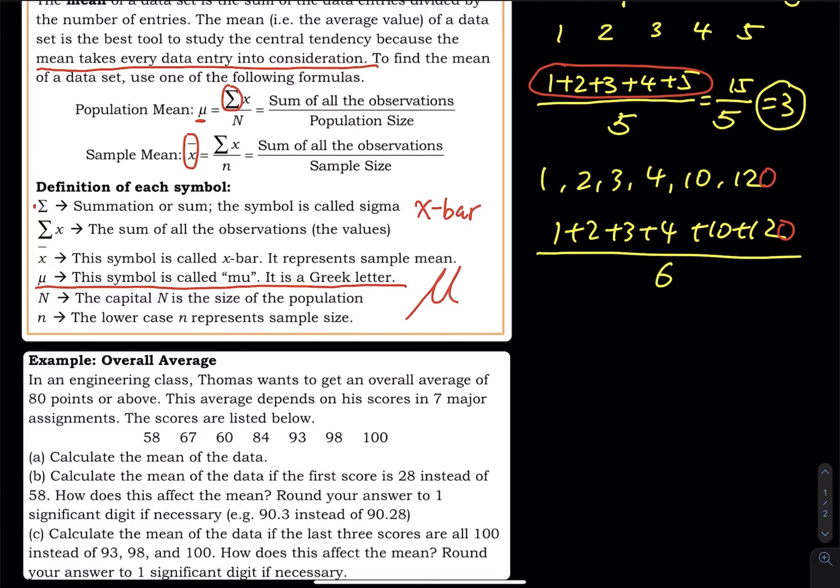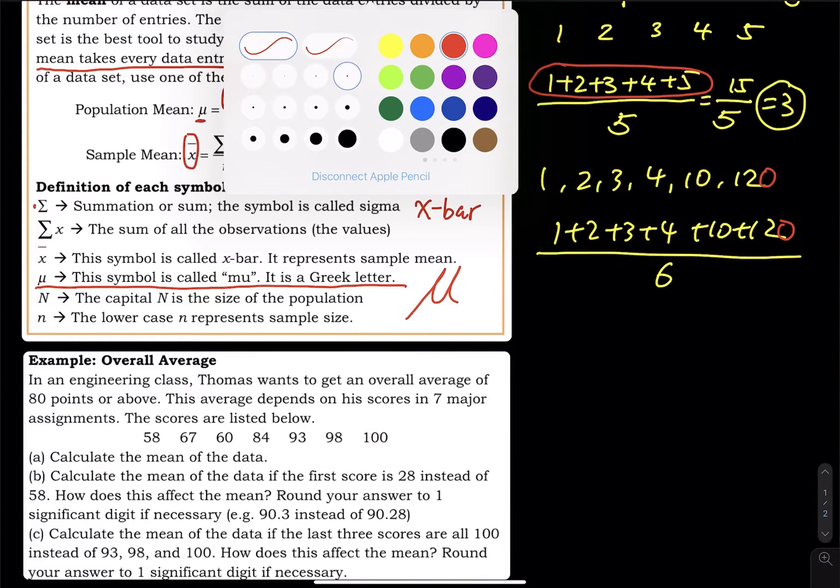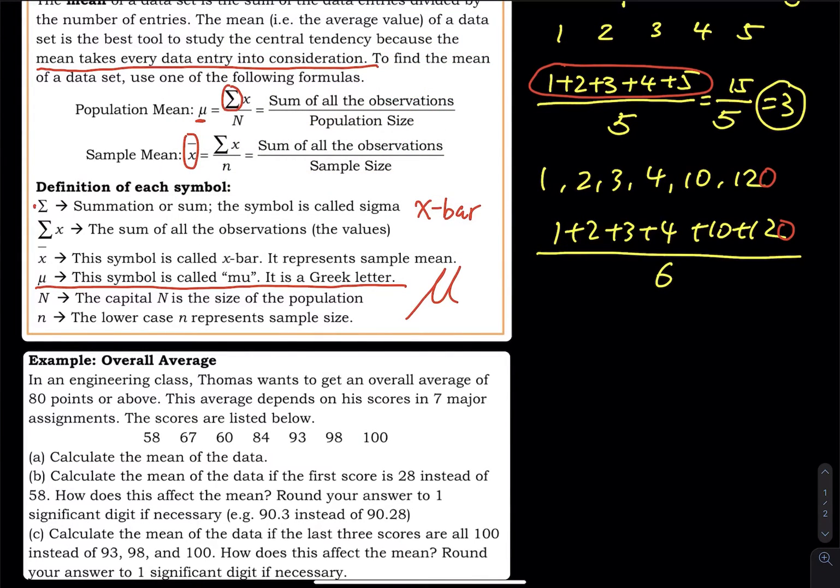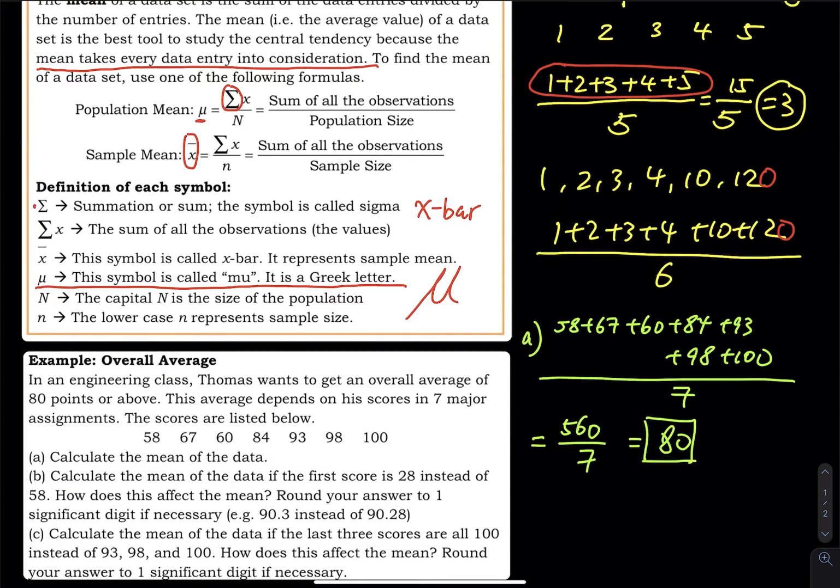Part (a): Calculate the mean of the data. To calculate the mean, I'm going to add up these seven values: 58 plus 67 plus 60 plus 84 plus 93 plus 98 plus 100, then divide by seven. The sum is 560 divided by seven, which equals exactly 80 points.